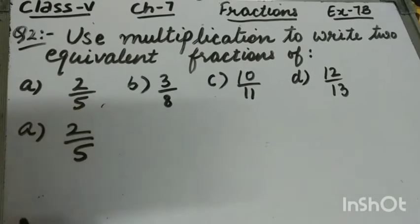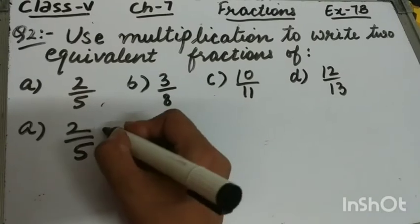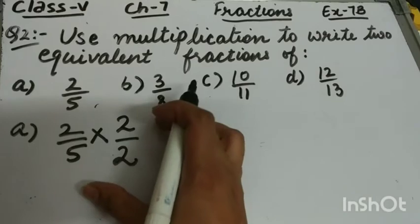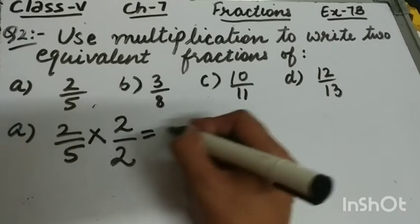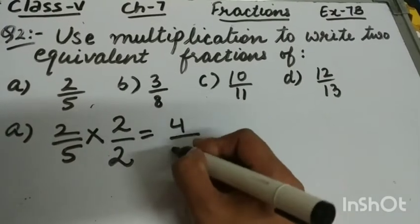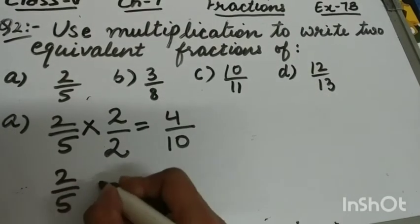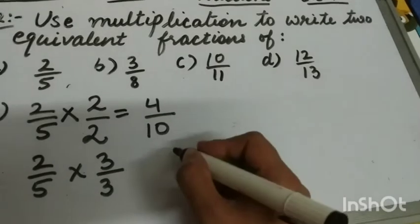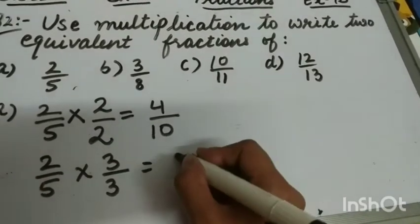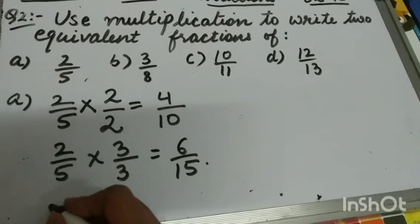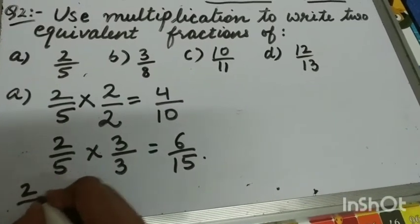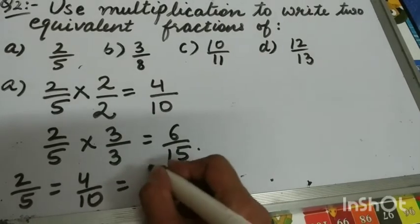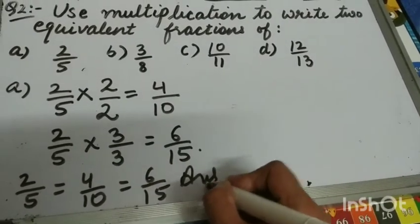Part A is 2 upon 5. To find the equivalent fraction, I'll multiply the numerator and denominator by the same number. First, I am multiplying by 2, which gives 4 upon 10. Next, I multiply the numerator and denominator by 3, which gives 6 upon 15. So two equivalent fractions of 2 by 5 are 4 by 10 and 6 upon 15.